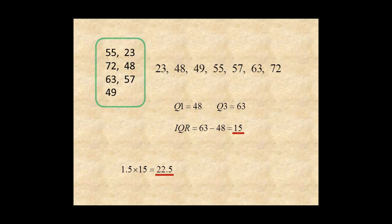Then add 22.5 to quartile 3 for 85.5 and subtract 22.5 from quartile 1 for 25.5.